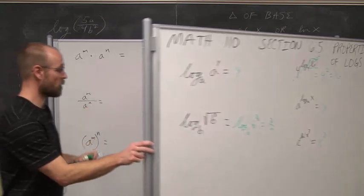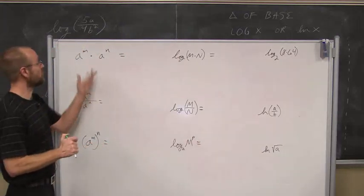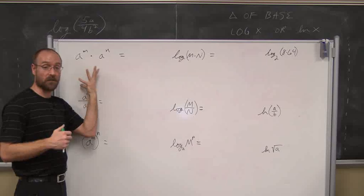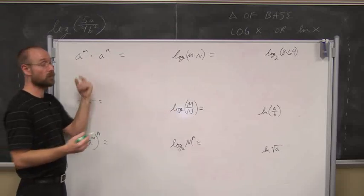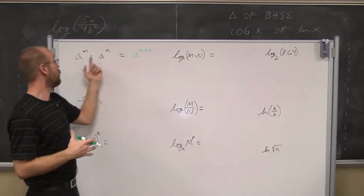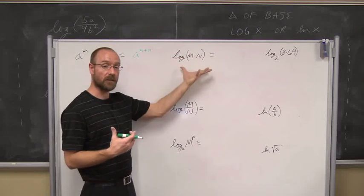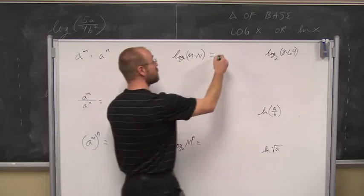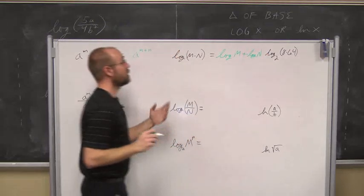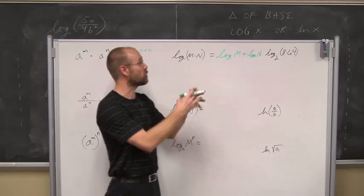Let's look at some other properties of logarithms. First, let's review the rules of exponents. If we have two quantities with the same base and we're multiplying them — that's the product rule — we can add the powers: a to the m times a to the n equals a to the m plus n. Since logarithms are exponents, when we have a product as the argument, we can use the product rule of logarithms: log of (m times n) equals log of m plus log of n.